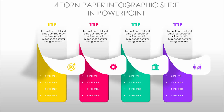In today's tutorial I'm going to show you how to create a four-tone paper infographic slide in PowerPoint. I've added four options where you can add the title, the detailed text, and a torn paper effect where you can add your icon. I've added a shadow effect, and for the second, third, and fourth options I've given different color combinations with different icons.